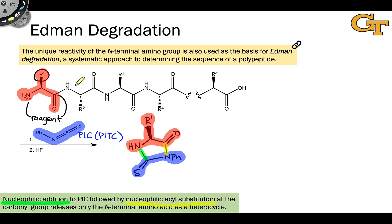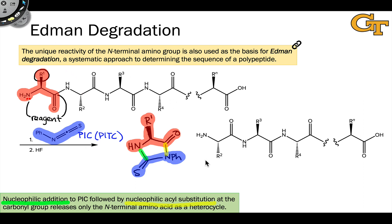Note also that what's missing is the nitrogen of the next amino acid in the sequence — that remains incorporated into a shortened polypeptide chain. We now have a new N-terminal residue with R2 as the amino acid, residue 2 now hanging off the end of this remaining polypeptide chain. This hints at the idea that we can repeat this sequence of reactions with PIC followed by hydrofluoric acid to once again cleave off the N-terminal residue, which is now residue 2, and characterize it.